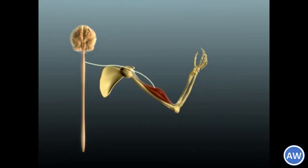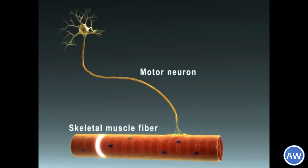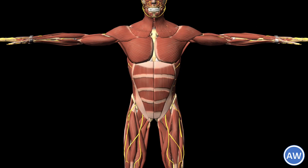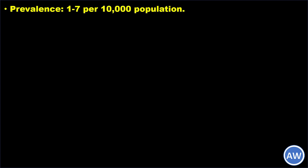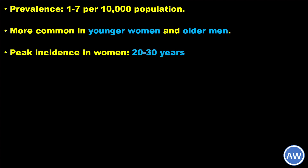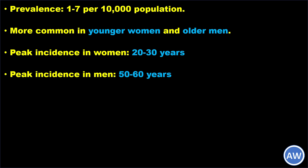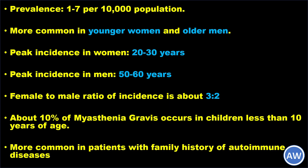All these factors lead to reduced transmission of the electrical impulse across the neuromuscular junctions. Stronger impulses fail to produce strong muscle contractions, resulting in generalized weakness of skeletal muscles throughout the body. The prevalence of myasthenia gravis is about 1 to 7 per 10,000 population. Interestingly, the disease is more common in younger women and older men — the peak incidence in women is at 20 to 30 years of age and in men at 50 to 60 years of age. The female to male ratio is about 3 to 2, and about 10% of cases occur in children less than 10 years of age. Incidence is more common in patients with a family history of autoimmune diseases.